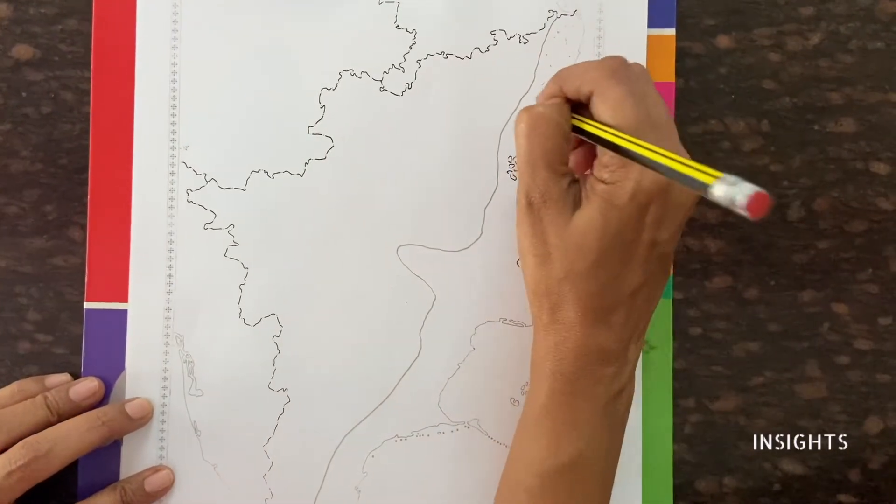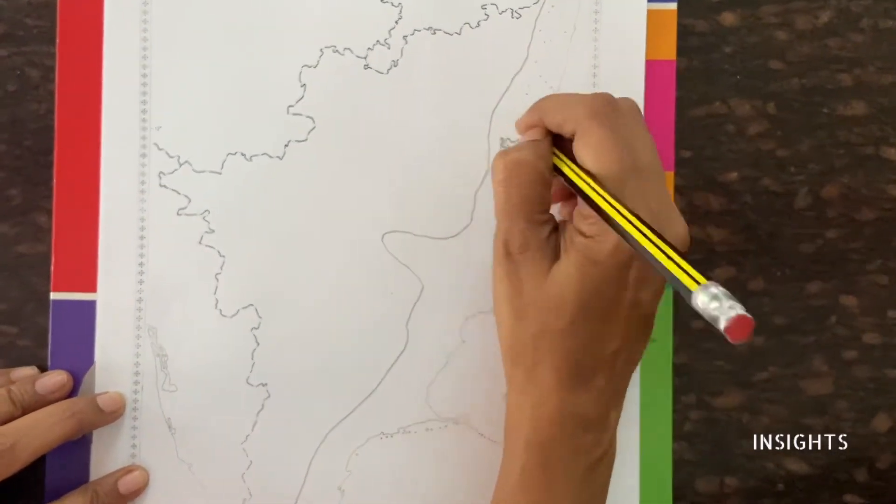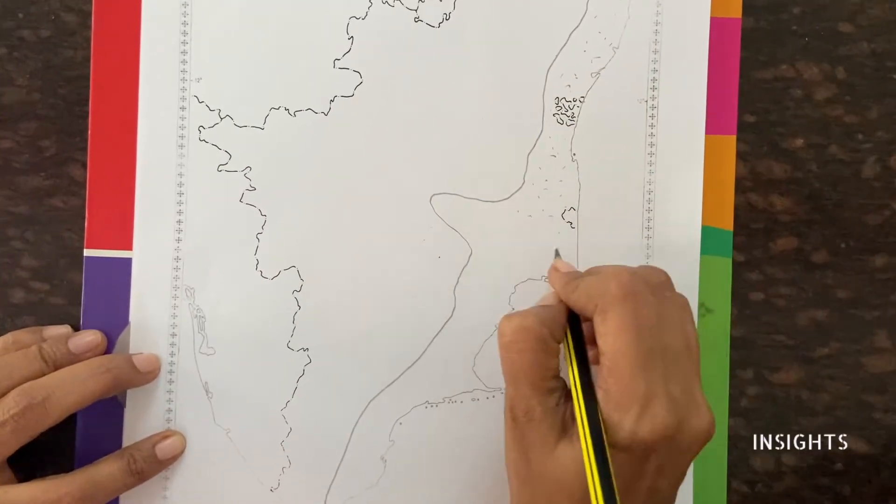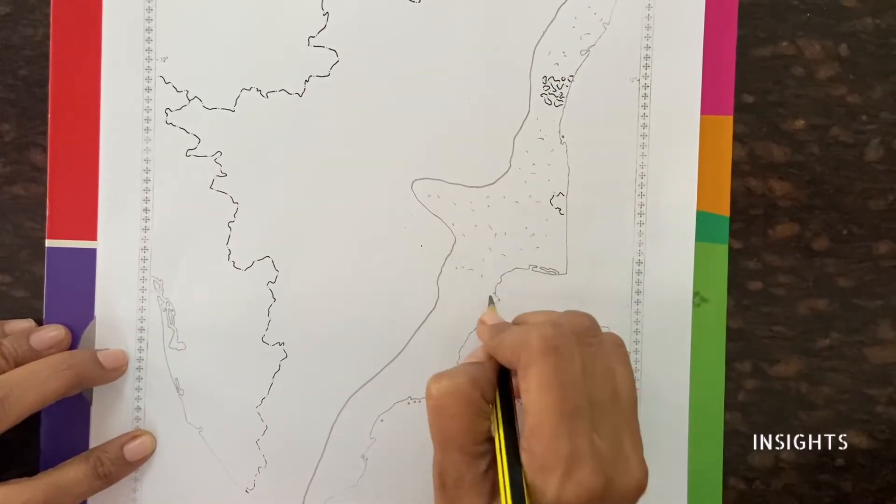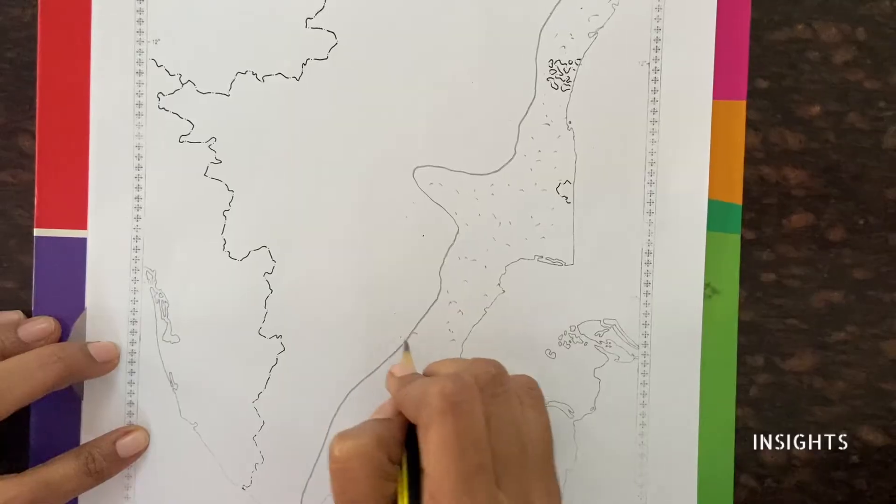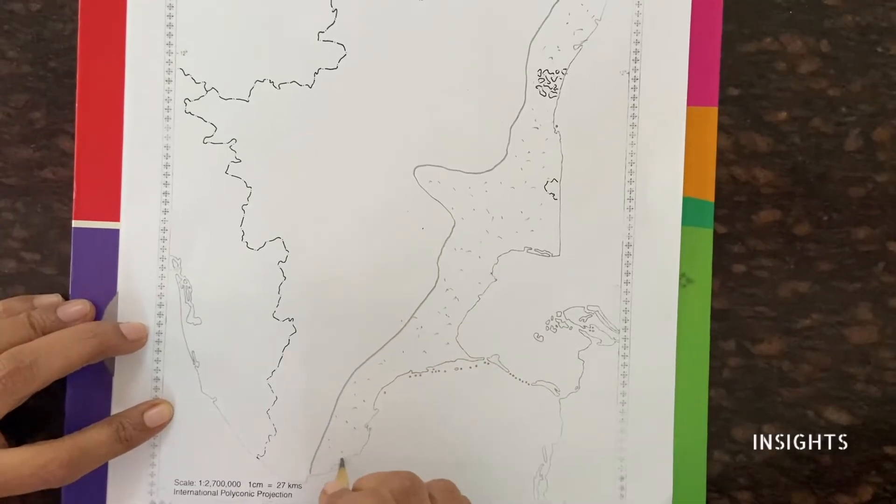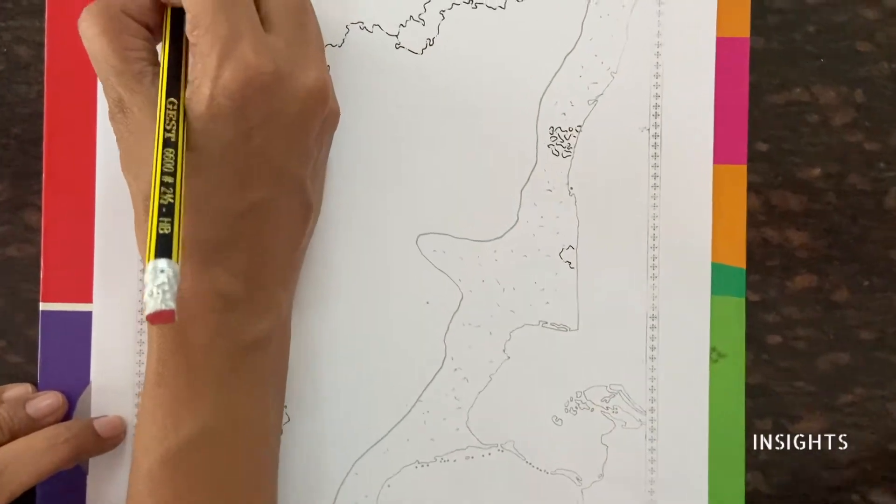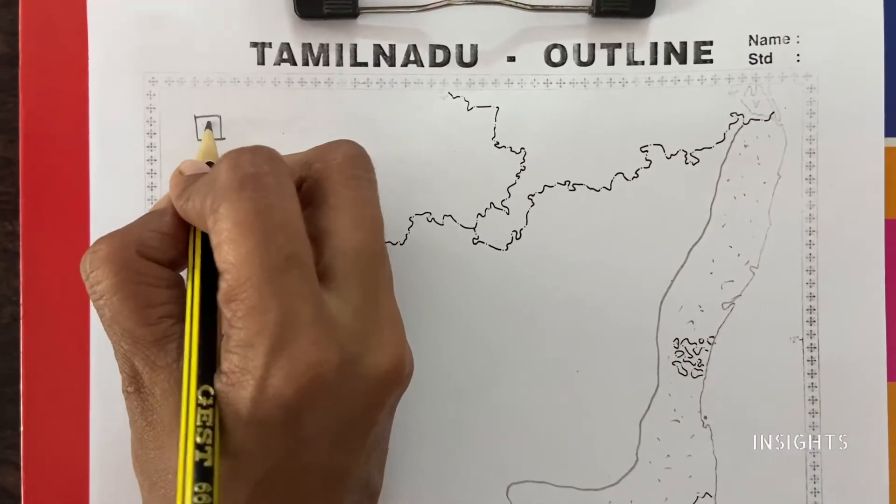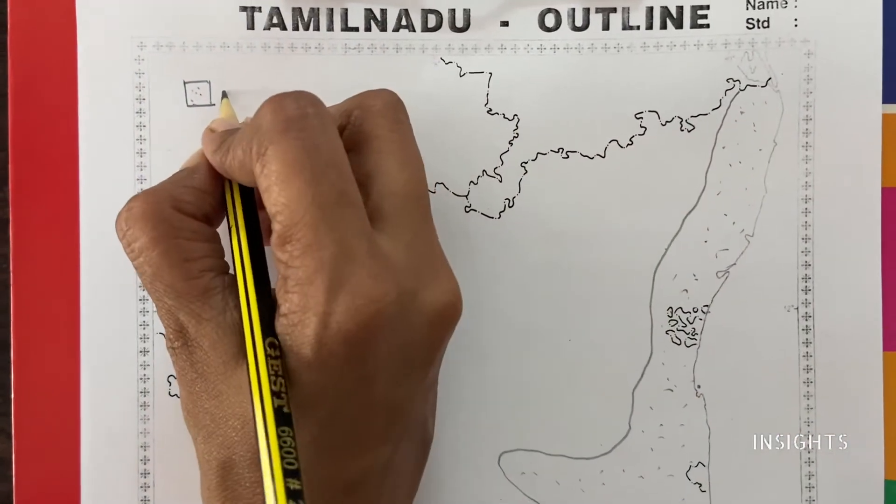We have to give some symbol for that. Small dots put in. You have to write the key, otherwise you may not get the mark for this. In key, let us draw a box and put the same thing that we have done here and write alluvial soil.